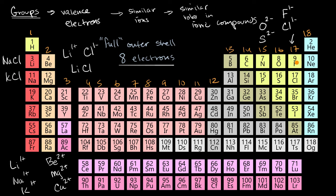Fluorine, bromine, or iodine can play a similar role as chlorine. So you could see something like sodium iodide or potassium iodide. The alkali metal would have lost an electron, the halogen would have gained an electron, and then they're attracted to each other, forming these ionic compounds.